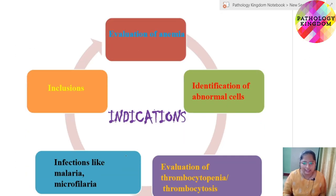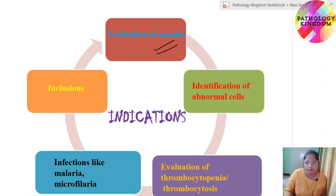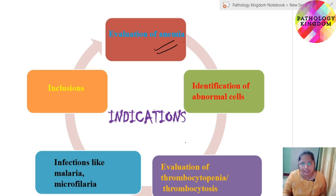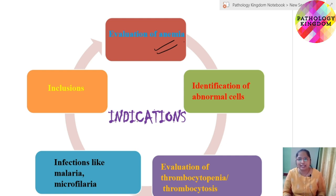Now, what are the indications? These are some indications of peripheral blood film: evaluation of anemia, identification of any abnormal cell, evaluation of thrombocytopenia and thrombocytosis, infections like malaria and microfilaria, and inclusions. These are the various indications for examining PBF.